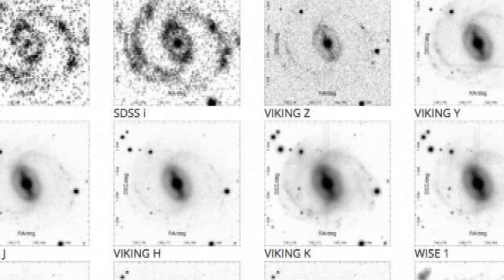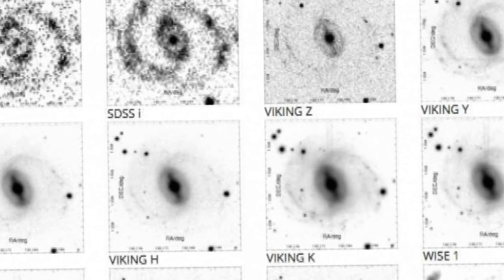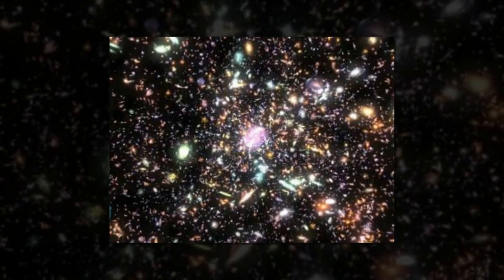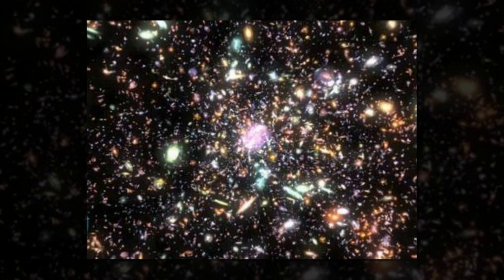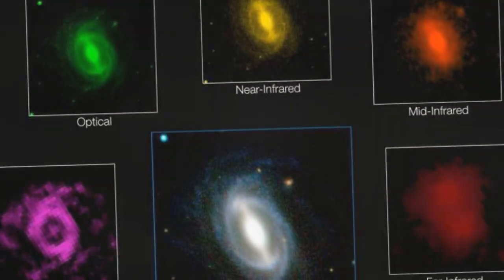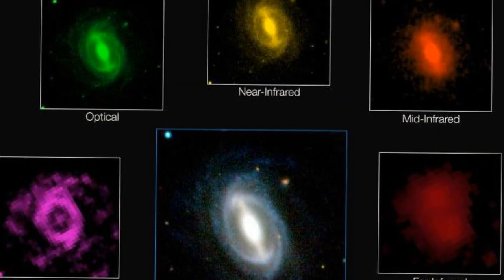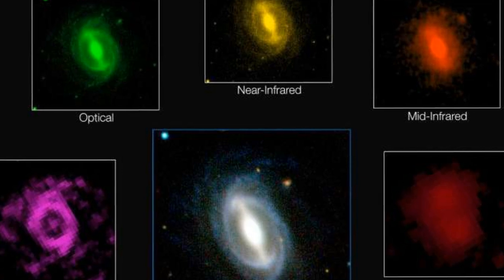We used as many space and ground-based telescopes as we could get our hands on to measure the energy output of over 200,000 galaxies across as broad a wavelength range as possible, says Simon Driver of the University of Western Australia, who heads the large GAMA team.